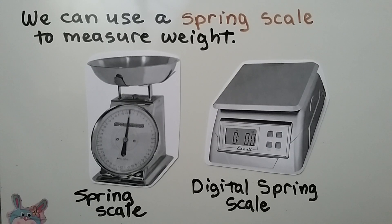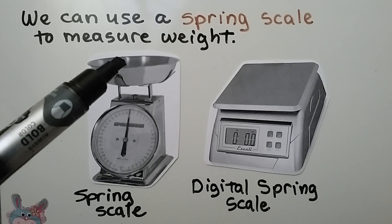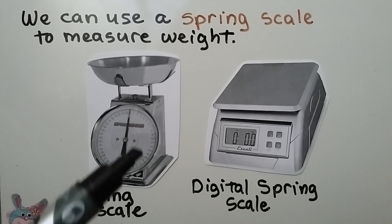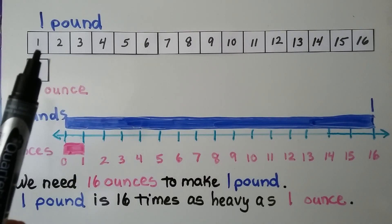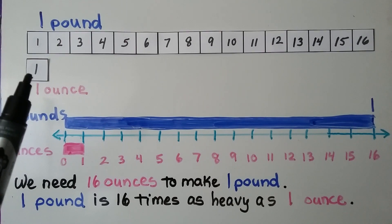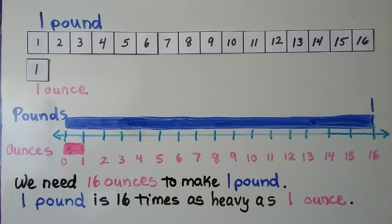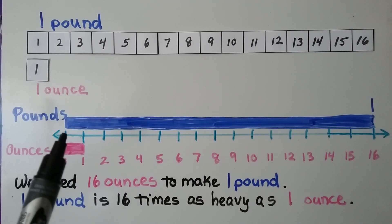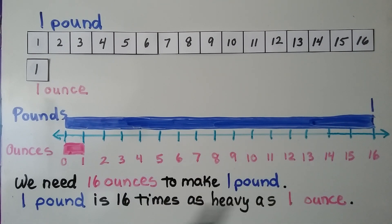We can use a spring scale to measure weight. Here's a regular spring scale and here's a digital spring scale — you put something in the dish and it makes the dial go around to show how heavy it is. Here we have a pound shown as 16 squares for ounces, and here's one ounce — just one square. Using a number line, we start at zero and each mark is an ounce; one pound is 16 ounces.